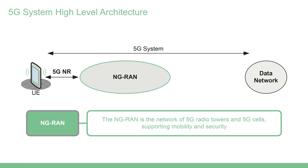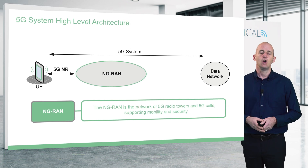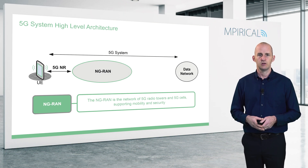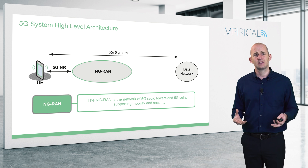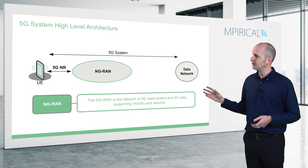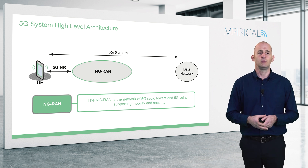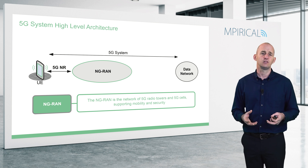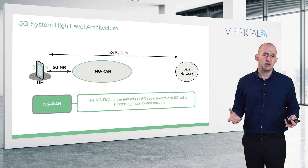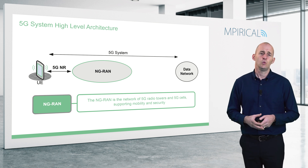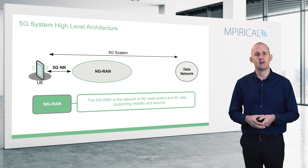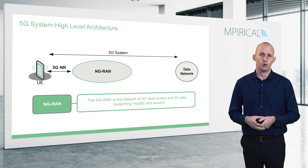The second element is the NG-RAN, the Next Generation Radio Access Network — the whole network of radio towers and 5G cells. The key responsibilities of the NG-RAN are to support a mobile network: as you move around a geographical location, you always need to be in 5G coverage, so the radio access network is designed to support device mobility. Security is also involved, ensuring the connection between the device and the radio access network is as secure as possible.